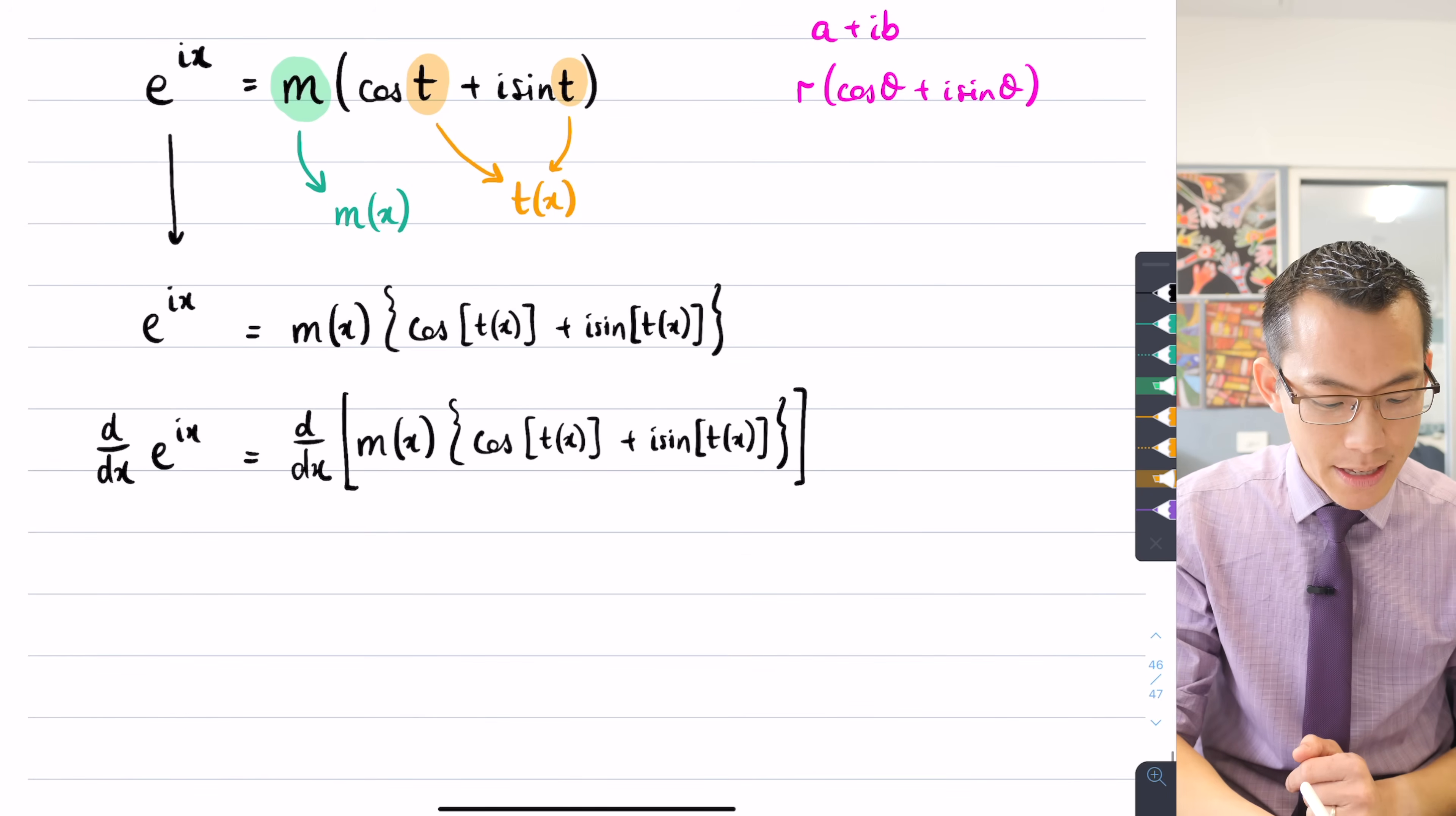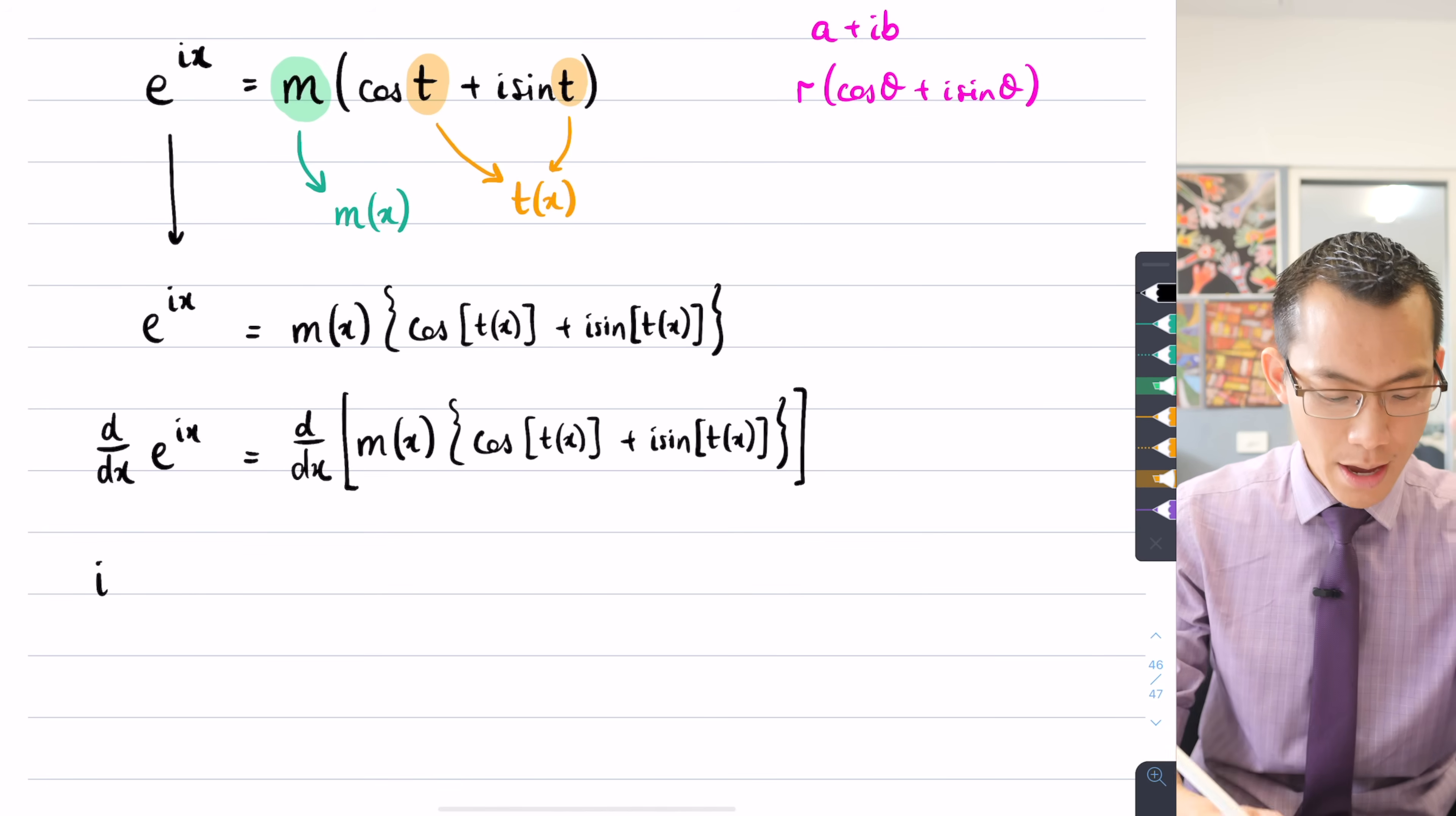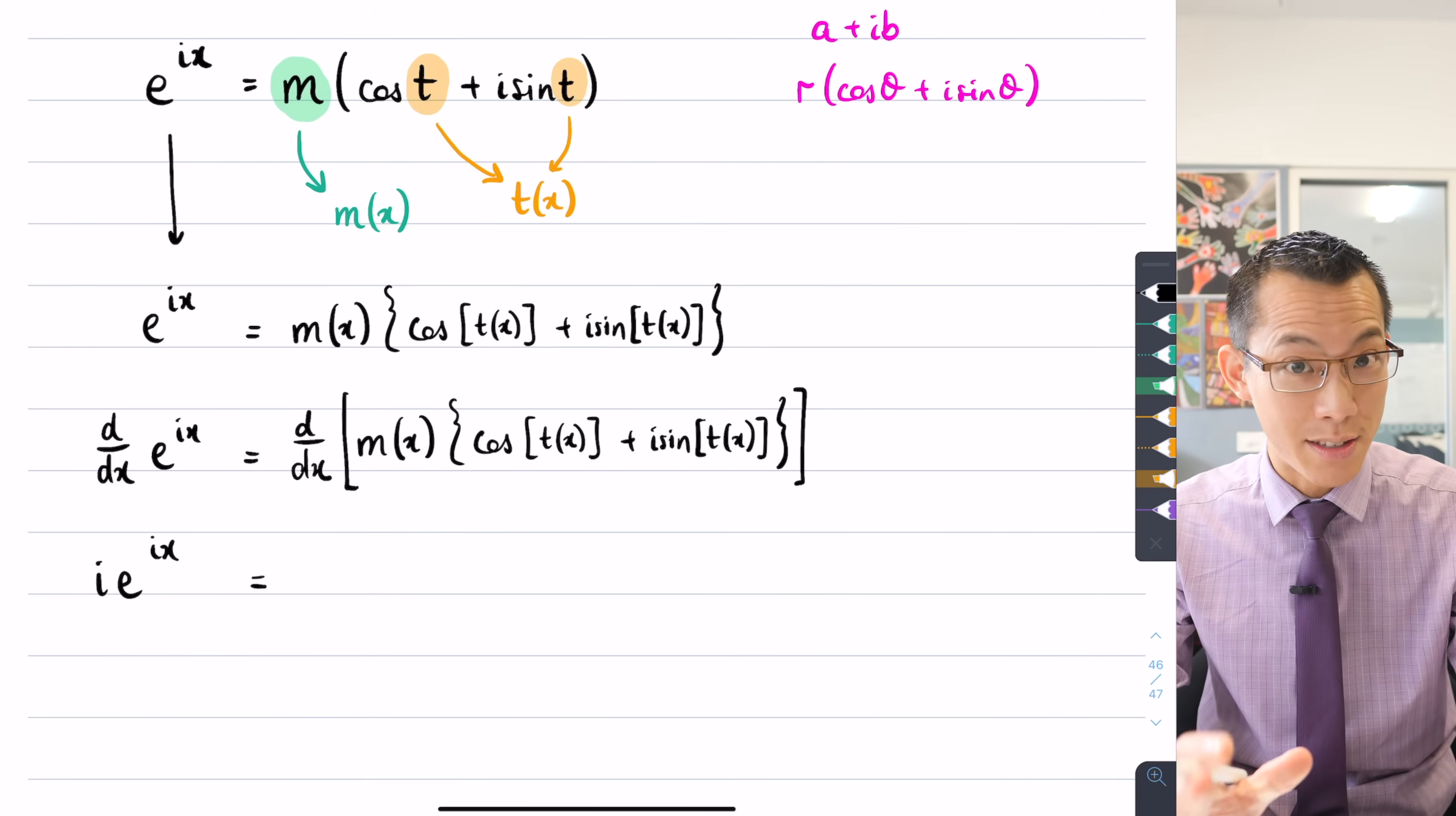Well, on the left-hand side, let's deal with that because it's a bit easier first. This is an exponential. Now you've already looked at these before, so the derivative of this, this is chain rule again, is going to be the derivative of the inside, which in this case, the derivative of ix is just i, and then the derivative of the outside is e to the power of something, so the derivative of that is just e to the power of the same something. So that's e to the ix. So I've dealt with the left-hand side, that's good.